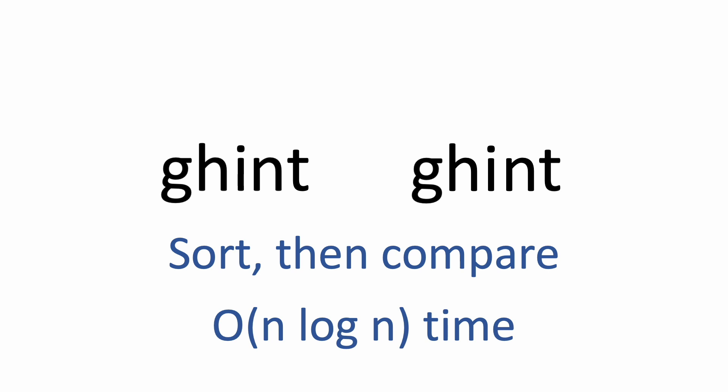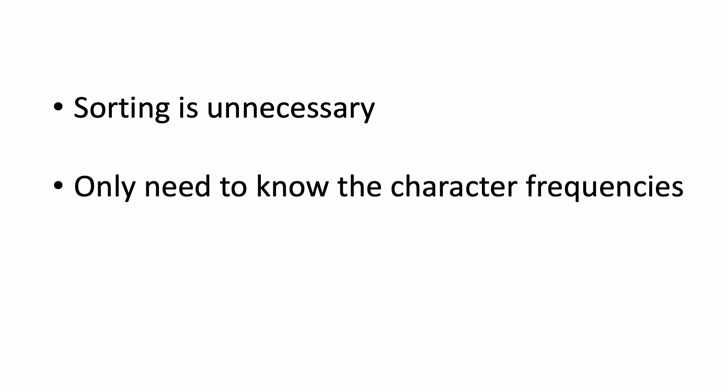So to improve this, the first insight we have is that there's actually no reason why the characters need to be in sorted order. The only thing we need to know are just the character frequencies. In other words, if two words use the same number of each character, then they are anagrams. We'll be using a Python dictionary to keep track of each character and its frequency. And as you'll see, this will allow us to reduce the runtime to O(n).